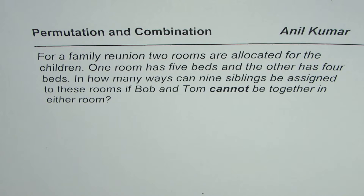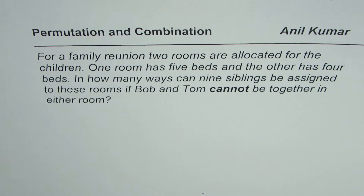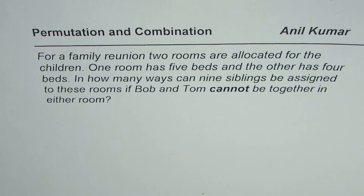I'm Anil Kumar. Here is another test question from Permutation and Combination. For a family reunion, two rooms are allocated for the children. One room has five beds and the other has four beds. In how many ways can nine siblings be assigned to these rooms if Bob and Tom cannot be together in either room?